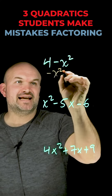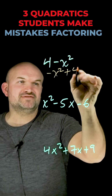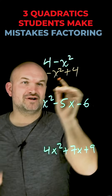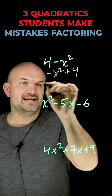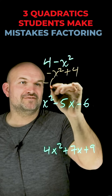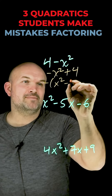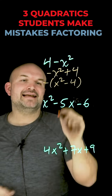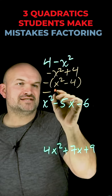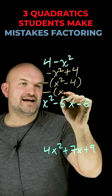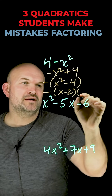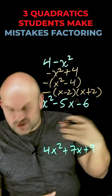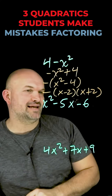If I have this as negative x squared plus 4, it's no longer a difference of two squares. But if I factor out the negative, I now have negative times (x squared minus 4). Now it's written as a difference of two squares, and I can factor this as negative (x minus 2)(x plus 2).